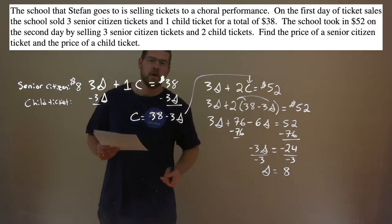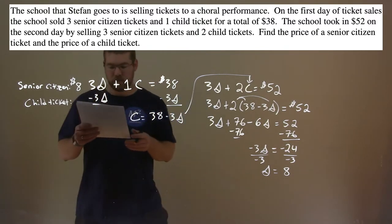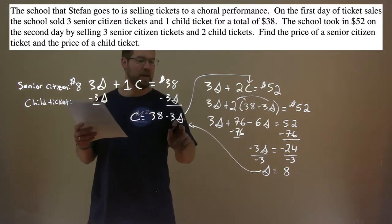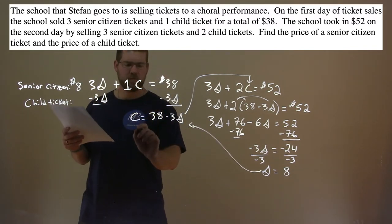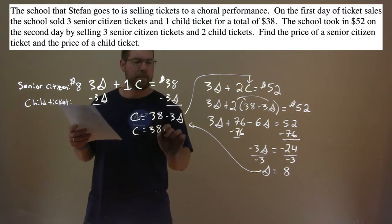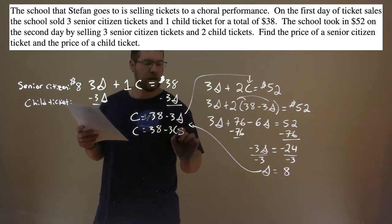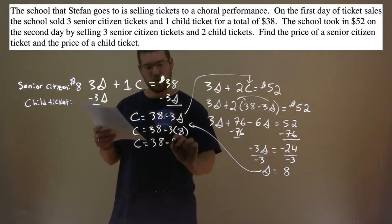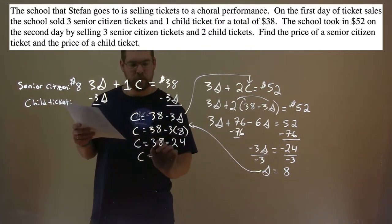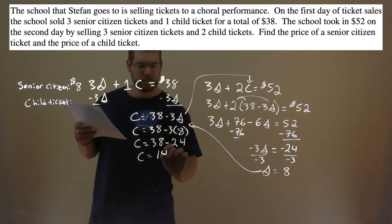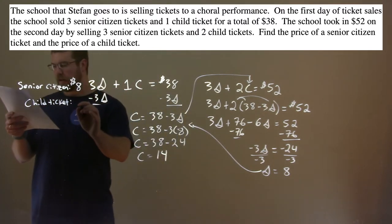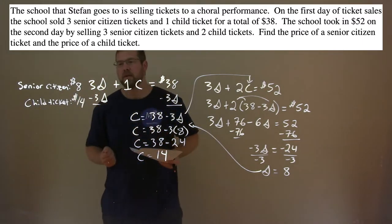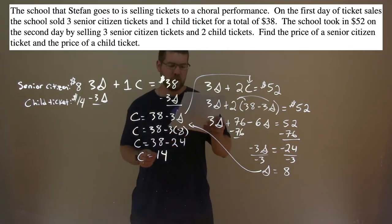Now we're going to use that to find the price of a child ticket. We take S equals 8 and plug it into our adapted first equation: C equals 38 minus 3 times 8. 3 times 8 is 24, and 38 minus 24 is 14. So the price of a child ticket is $14. Senior citizen ticket price is $8 and a child ticket is $14.